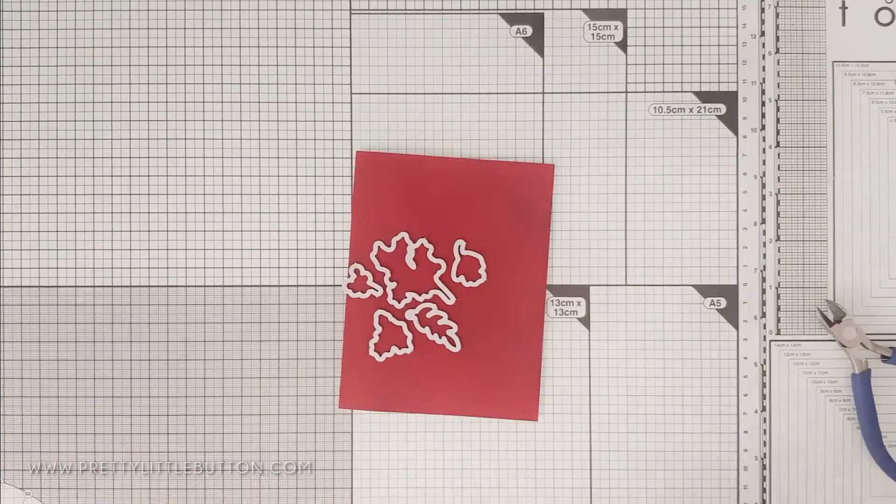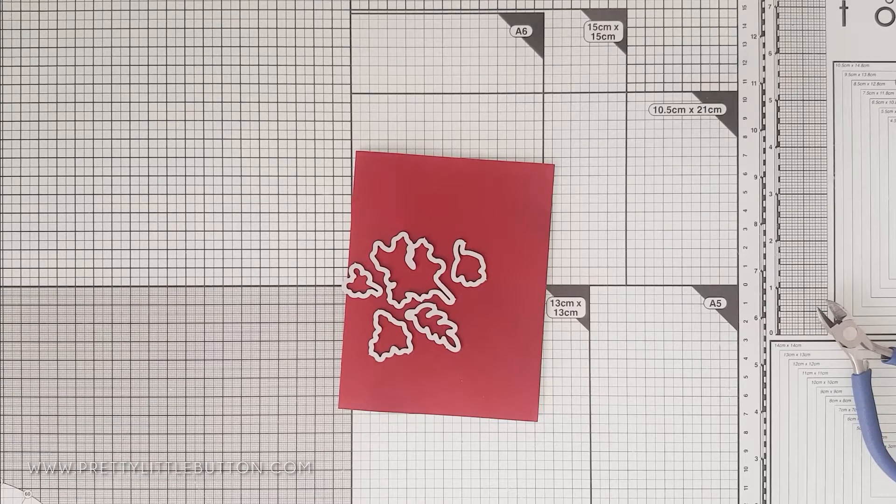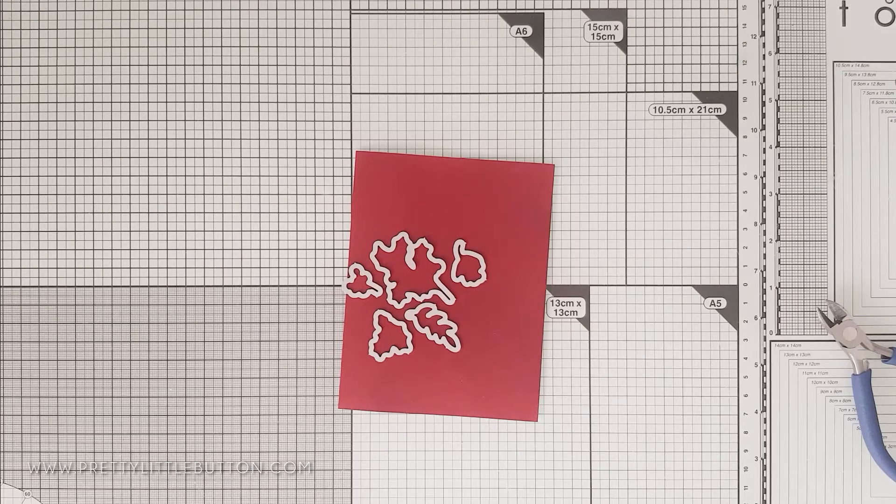I'm using just the smaller dies out of the stamp set and positioning them onto the card, moving them around, starting off more in the middle because it will be easier to create the pattern if you start from the middle and work your way out. I'm going to have to dry emboss these dies several times to fill the cardstock up.